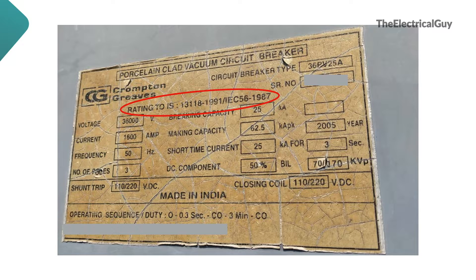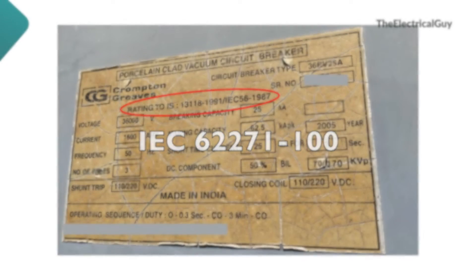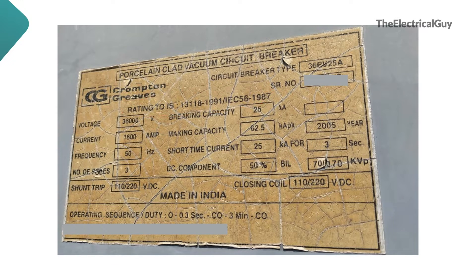This IEC 56 is now withdrawn and it is replaced by IEC 62271-100, which applies to alternating current circuit breakers. Next is rated voltage, which is 36 kV in this case.